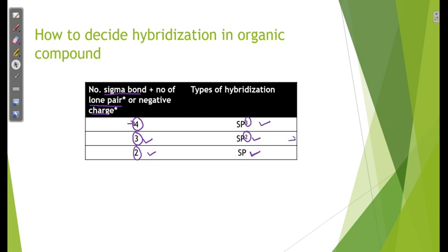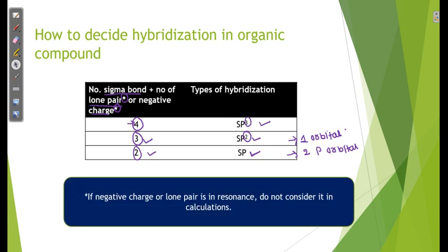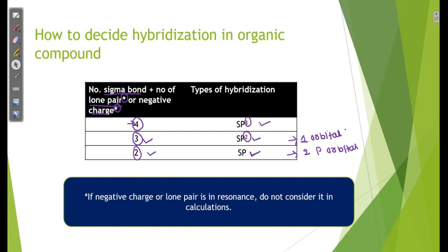One p orbital is not hybridized in sp2, and two p orbitals are not hybridized in sp. This is very important: a star rule applies — if a negative charge or lone pair is in resonance, do not consider it in hybridization calculations. This rule is critical for improving your concept.